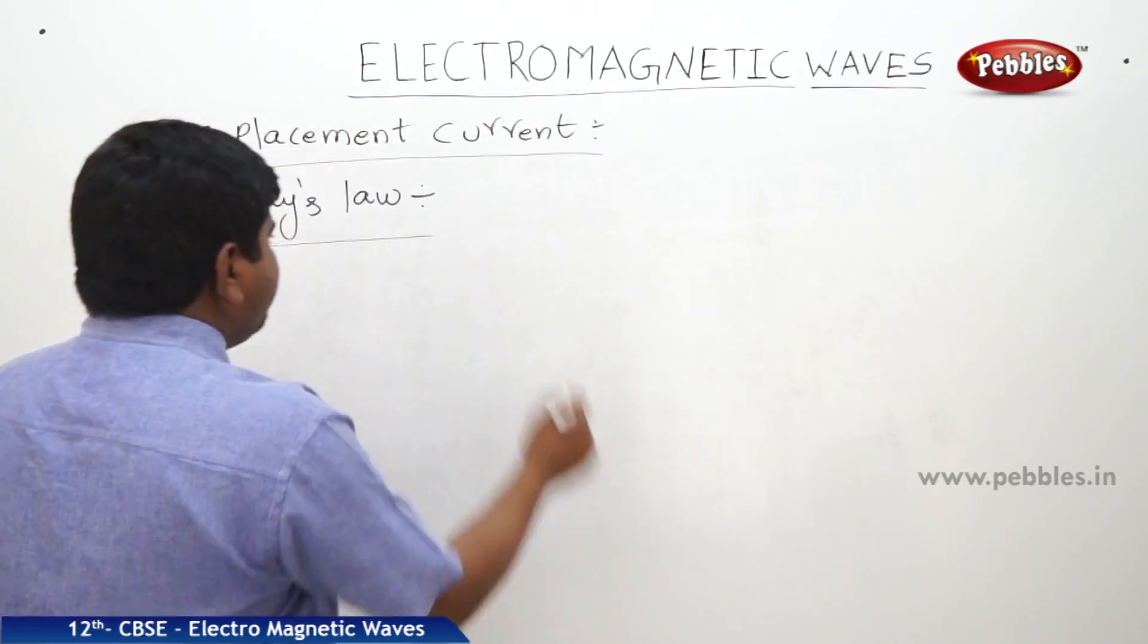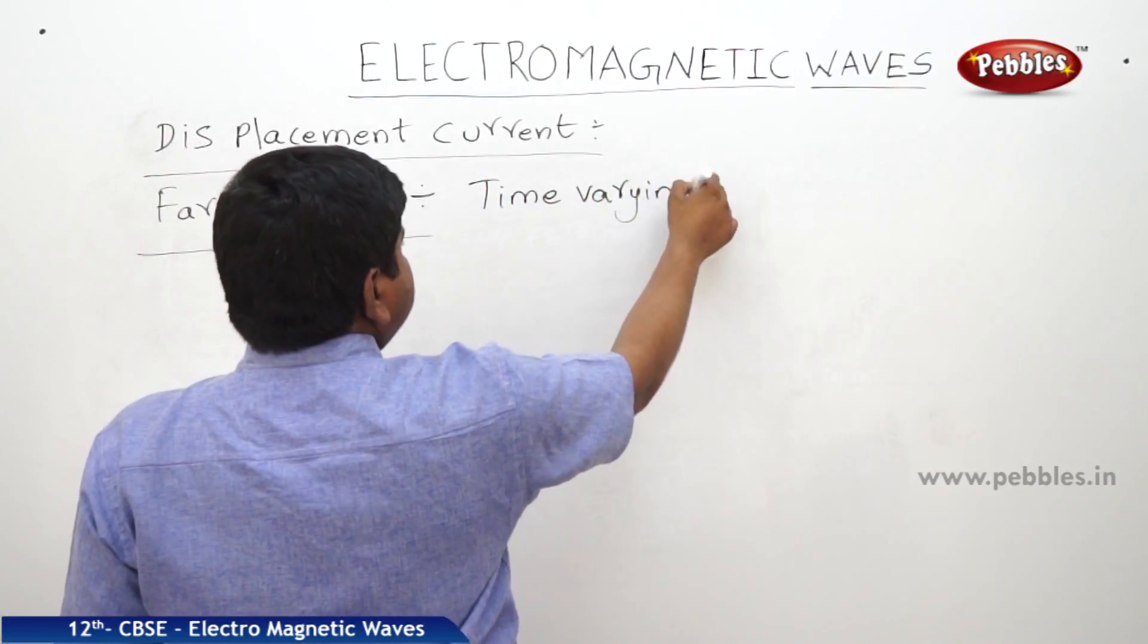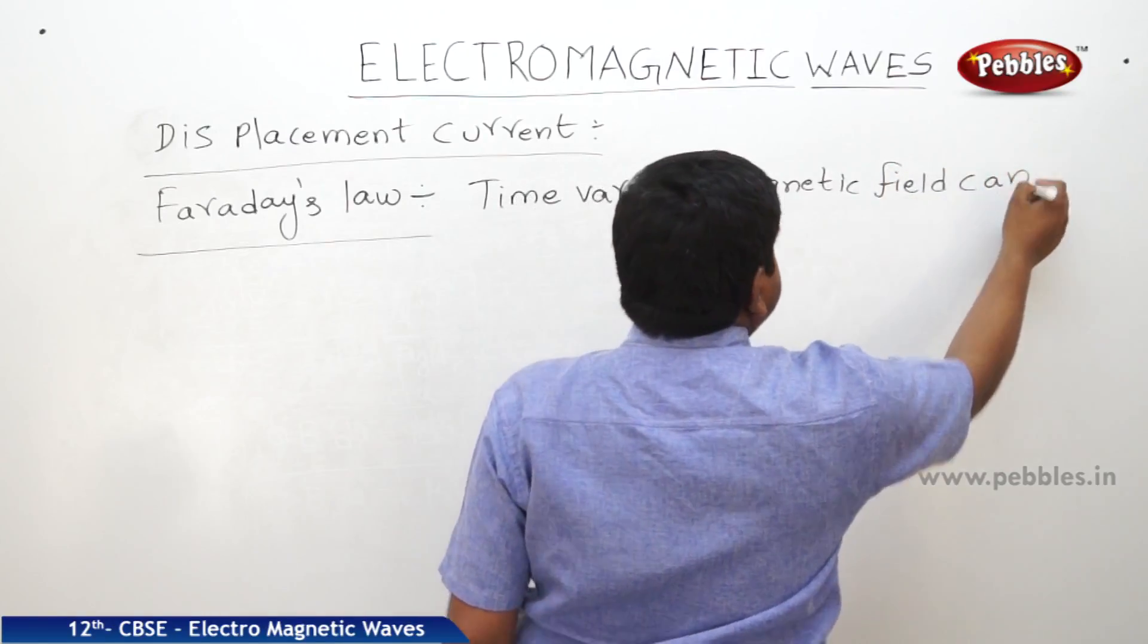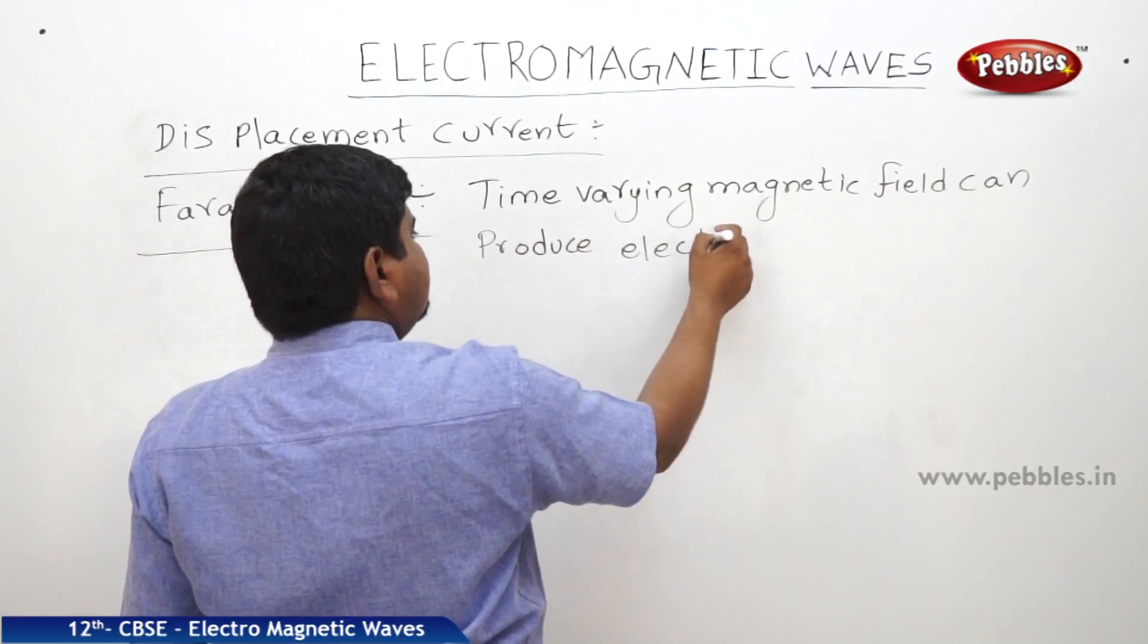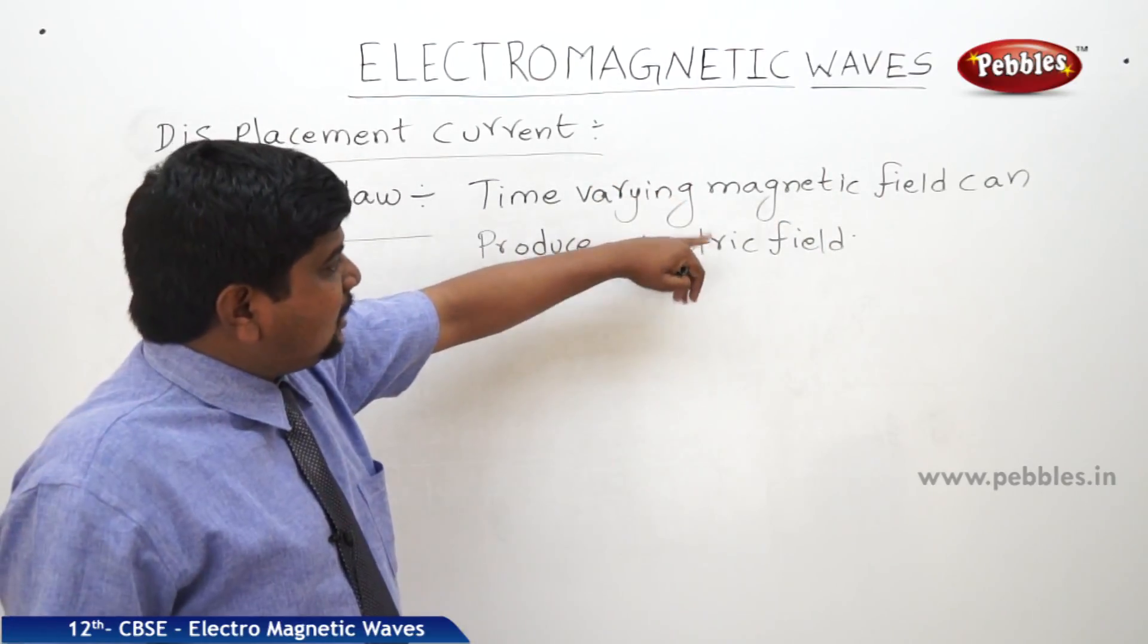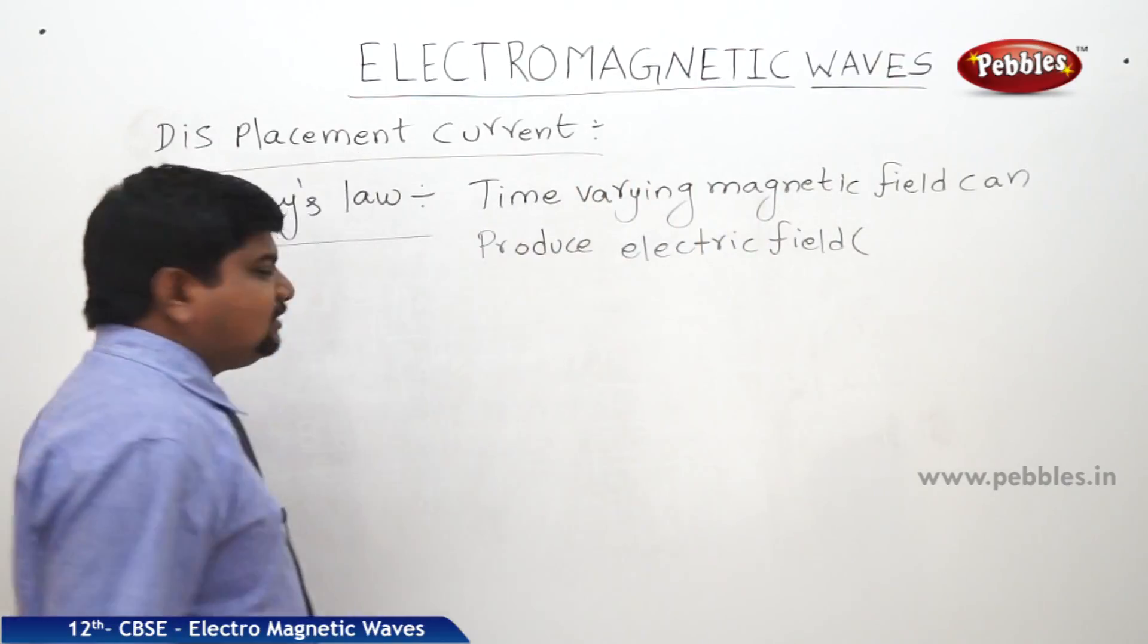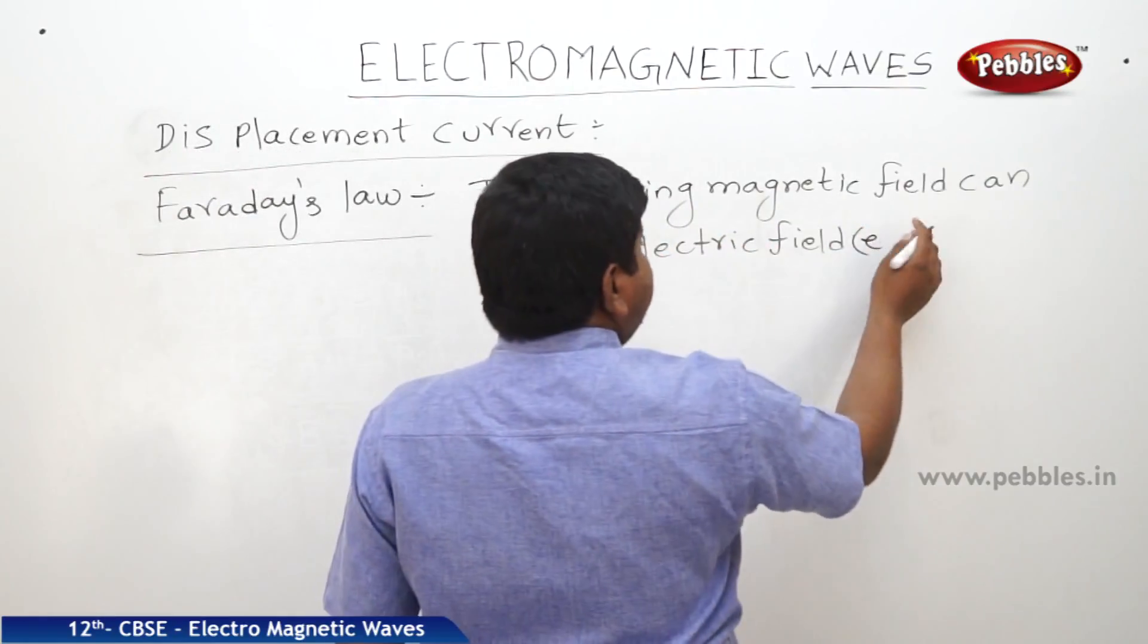If you try to remember the Faraday's law of electromagnetism. What is the Faraday's law of electromagnetism? So, time varying magnetic field or magnetic flux can produce electric field or electric flux. Induced EMF.